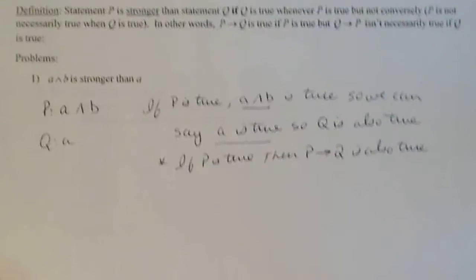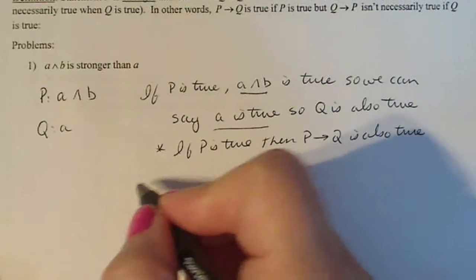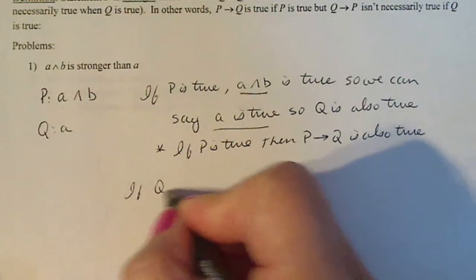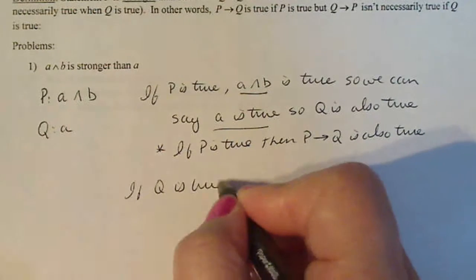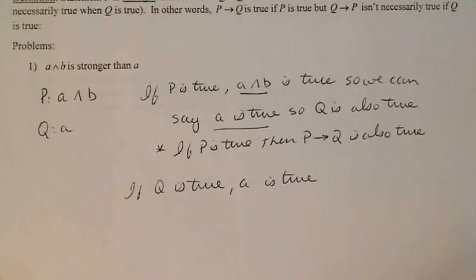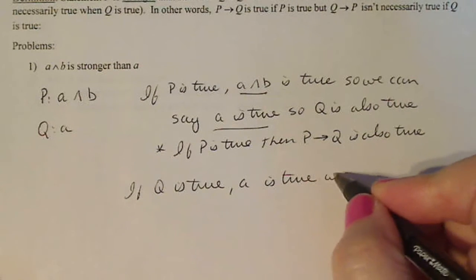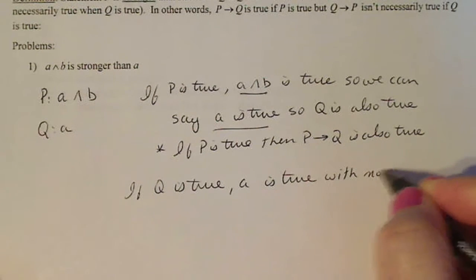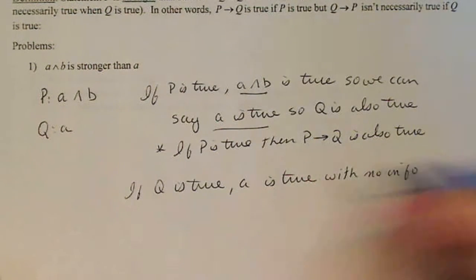Now let's try the converse. Let's start out with if Q is true. If Q is true, A is true. What can we say about B? Well, we don't have any information about B. A is true with no information about B.